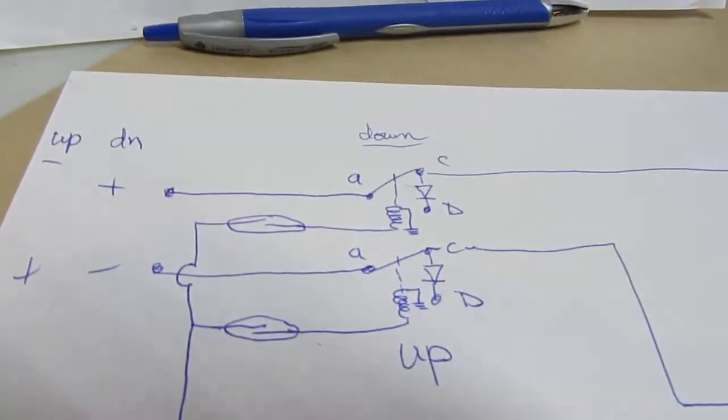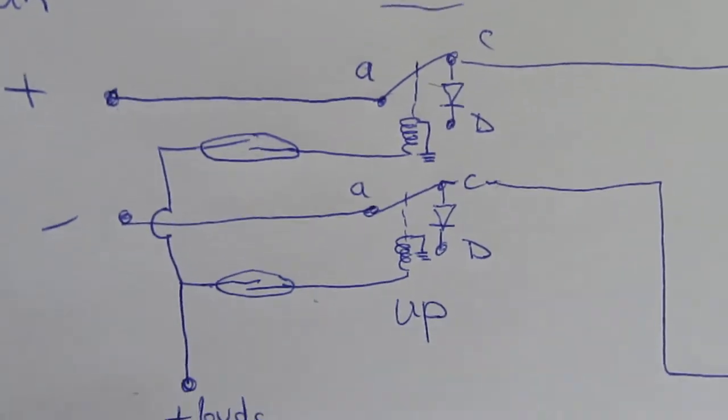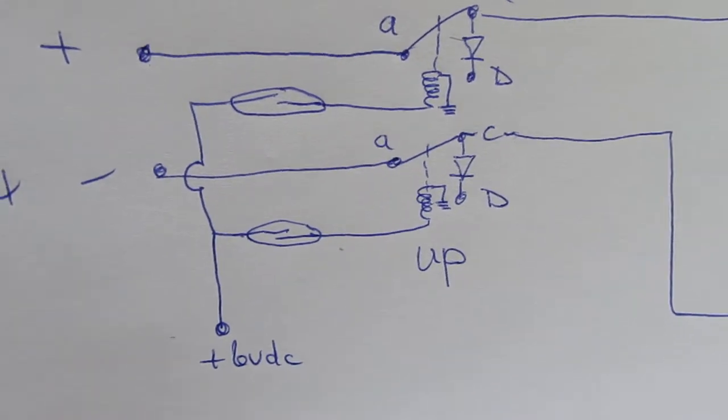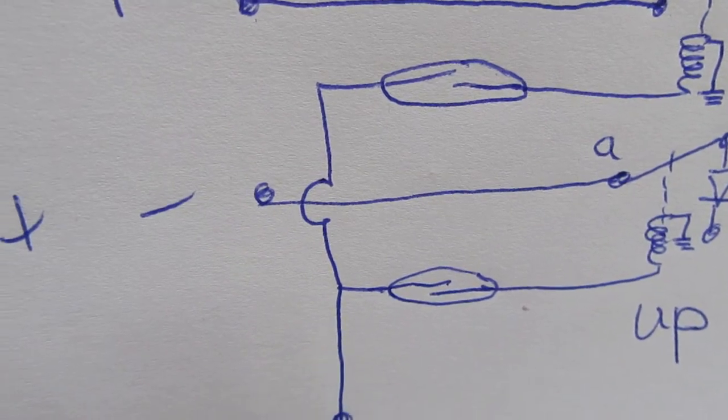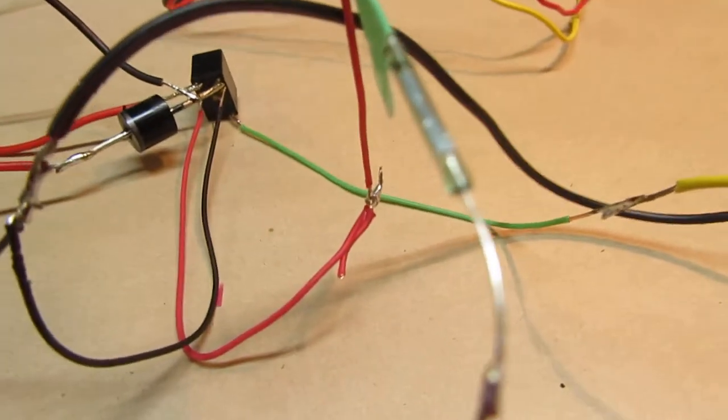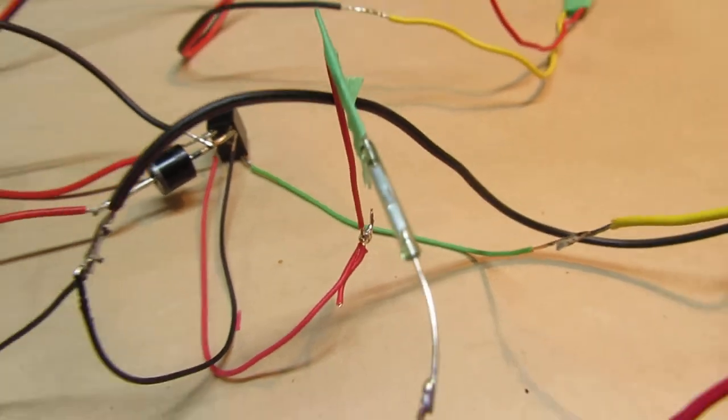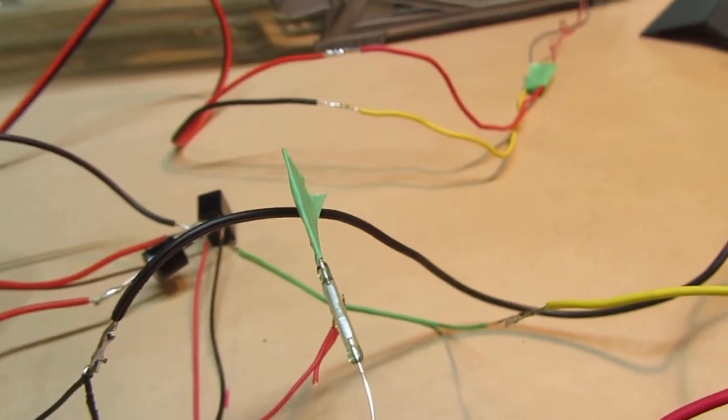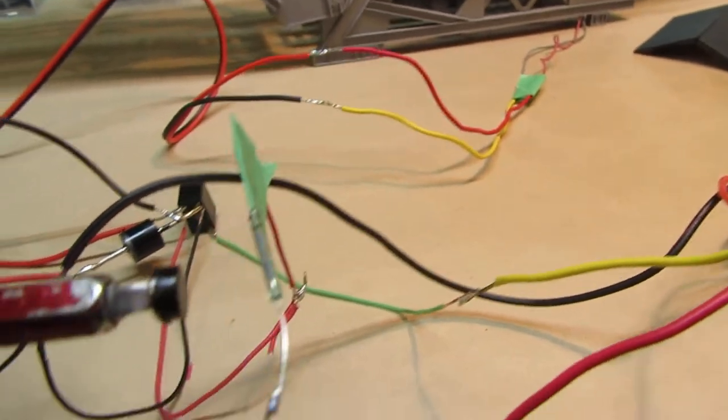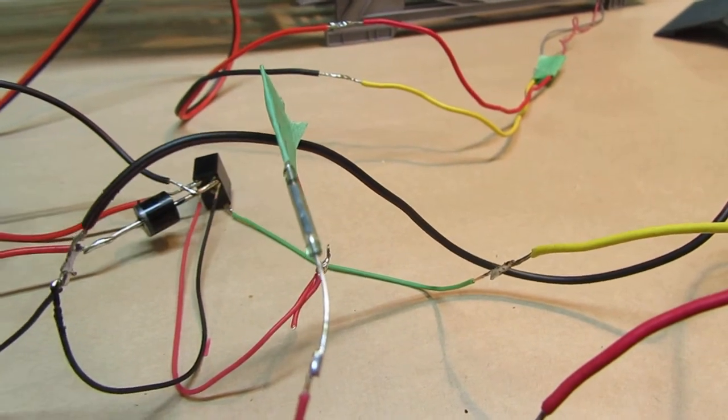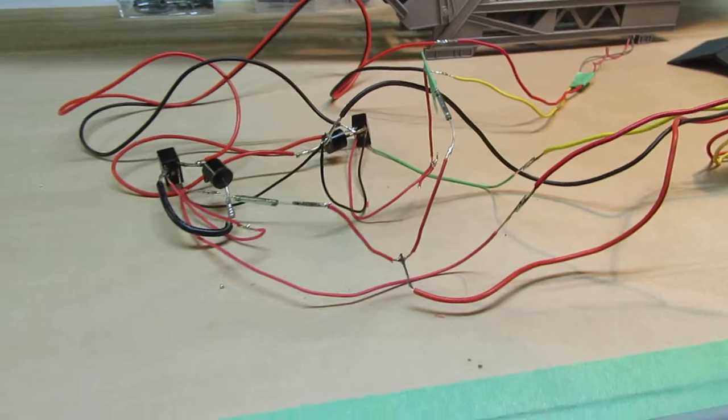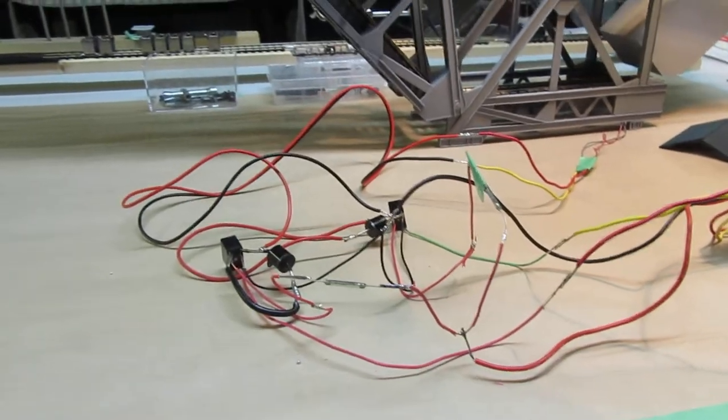So what I did is I reworked the schematic and replaced the limit switches with some relays I had on hand, and I'm going to use reed switches. If you're not familiar with reed switches, they are little tiny switches that operate when a magnet comes close to them. Here's a magnet, you can hear a little click. Anyway, so I've wired all this in with some diodes and made it the proper way, and I'll show you what happens.